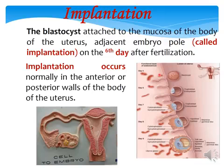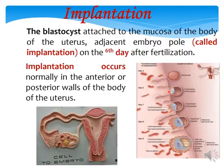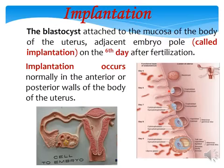The blastocyst attaches to the mucosa of the body of the uterus when it contacts the mucosa adjacent to the embryonic pole. This is called implantation, and it usually occurs on day 6 after fertilization. Normal implantation occurs in the anterior or posterior wall of the body of the uterus.